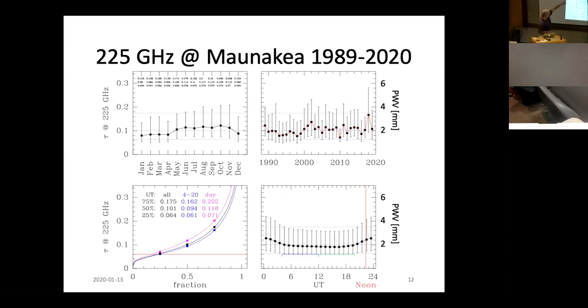There is a seasonal dependence. The seasonal dependence is not terribly strong, but January, the winter months are generally better than the summer months. There's a daily dependence. The afternoon is worse than the night, which is why we observe at night. And then the yearly annual dependence scatters around. The interannual variation is somewhat higher than the seasonal variation.